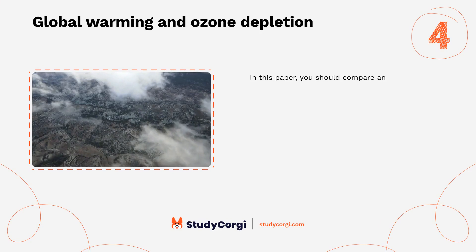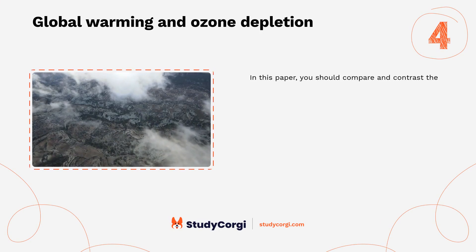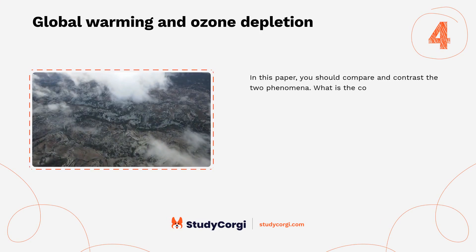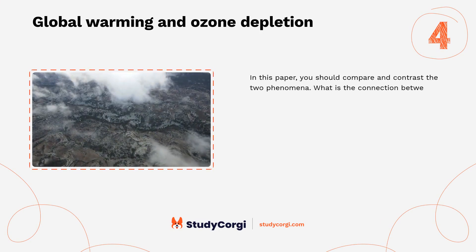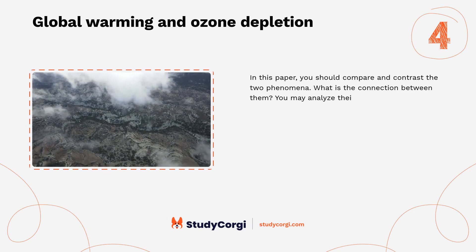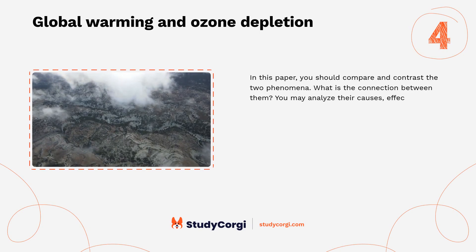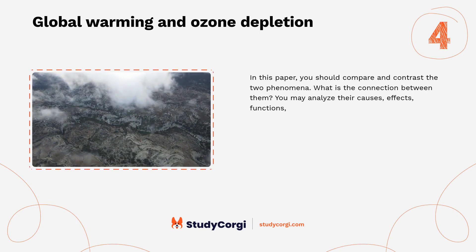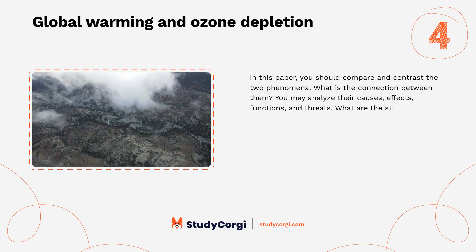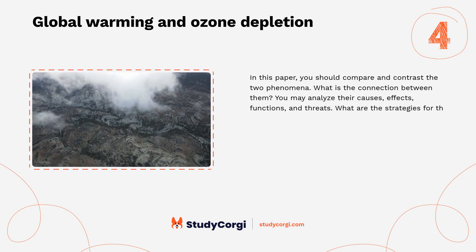Global warming and ozone depletion. In this paper you should compare and contrast the two phenomena. What is the connection between them? You may analyze their causes, effects, functions, and threats. What are the strategies for their reduction?